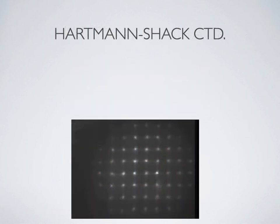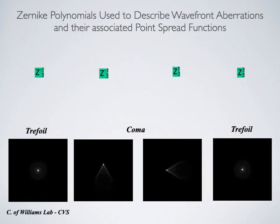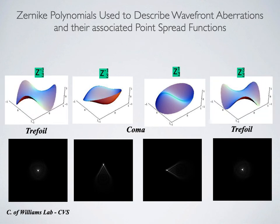This is an ideal wavefront, and this shows wavefronts of optically imperfect eyes — a disrupted tear film on the left and keratoconus on the right. For normal eyes, computers plot out the wavefront shape as a topography — not of the cornea, but of the wavefront itself — described using a 3D polynomial.